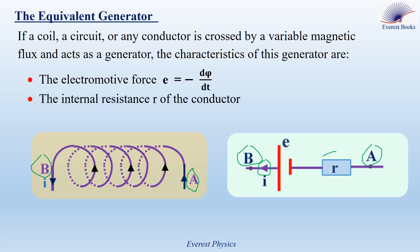Third, when you draw the series combination of the internal resistance and the ideal battery, you can switch them — R can be drawn to the right or to the left; this is a series combination. Fourth, and most important: I must flow out from the positive pole of the generator. This is the positive pole and this is the negative pole. If you draw the ideal generator incorrectly, the figure is not correct.